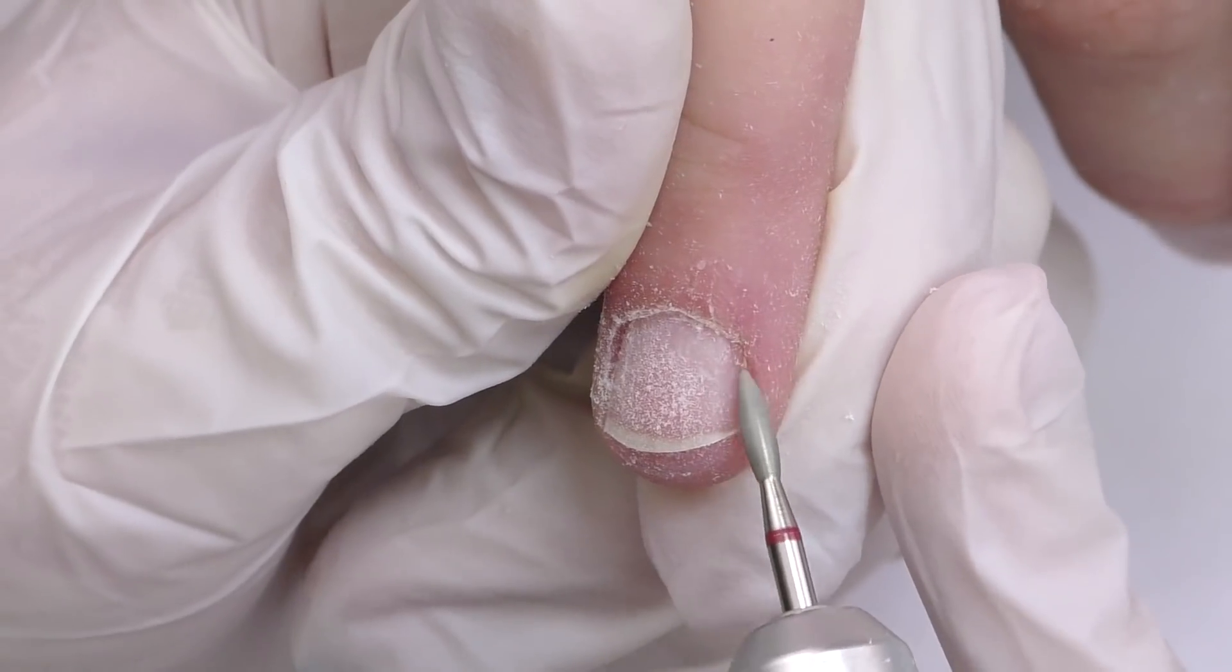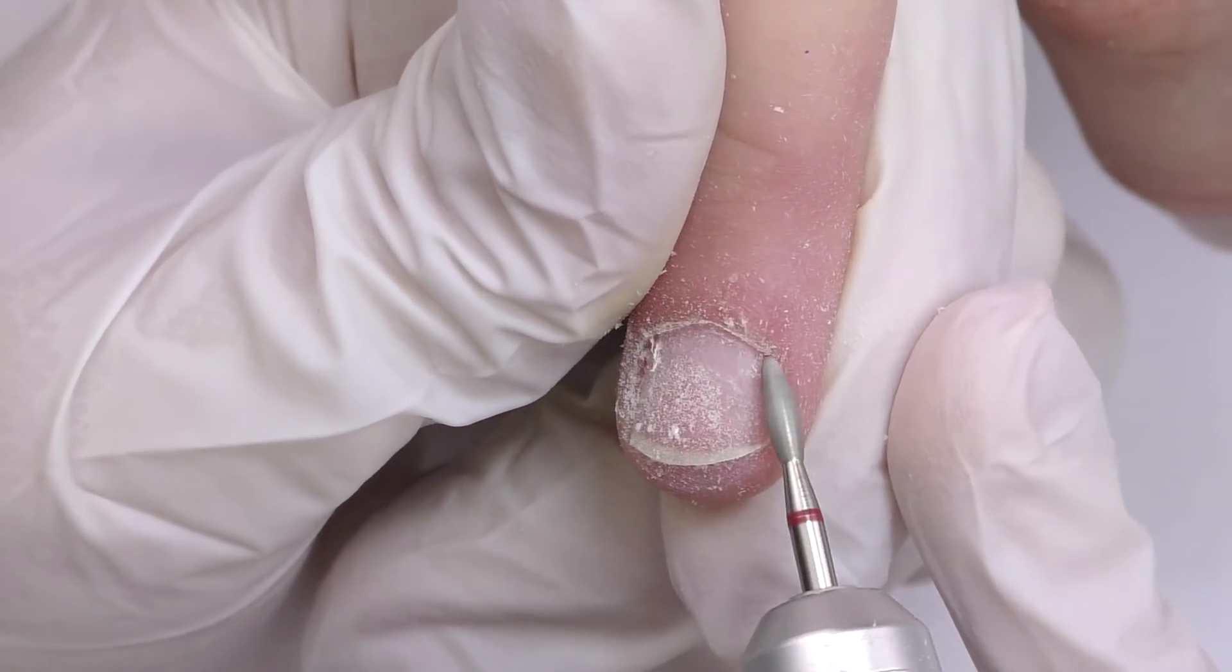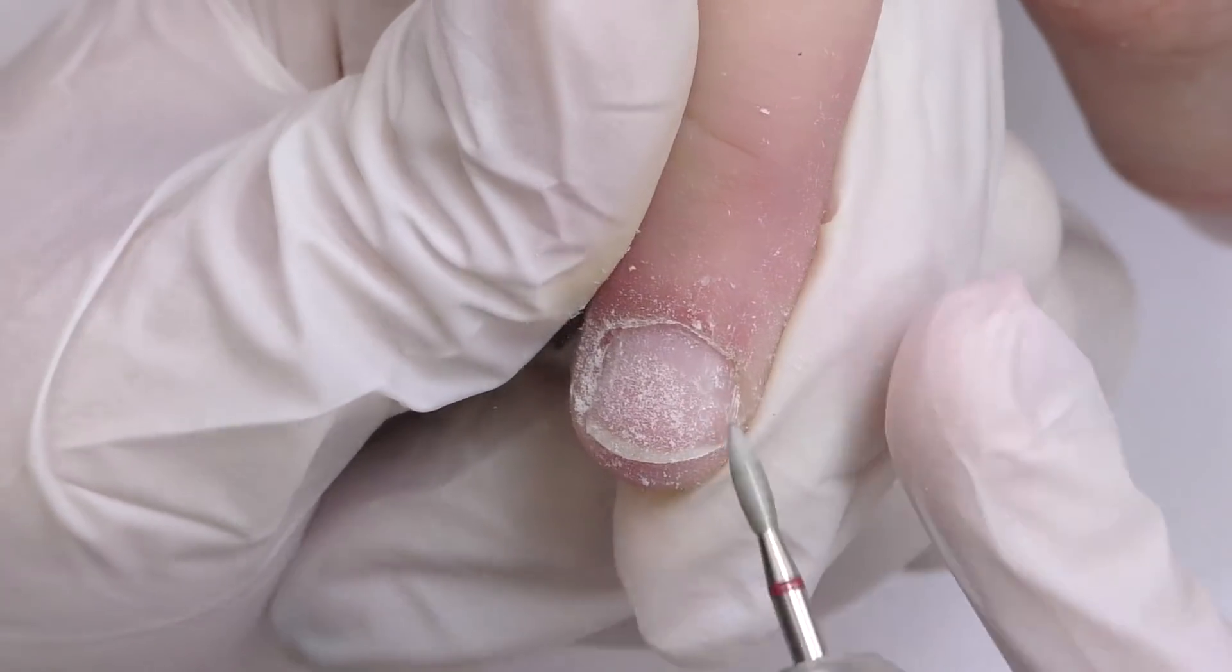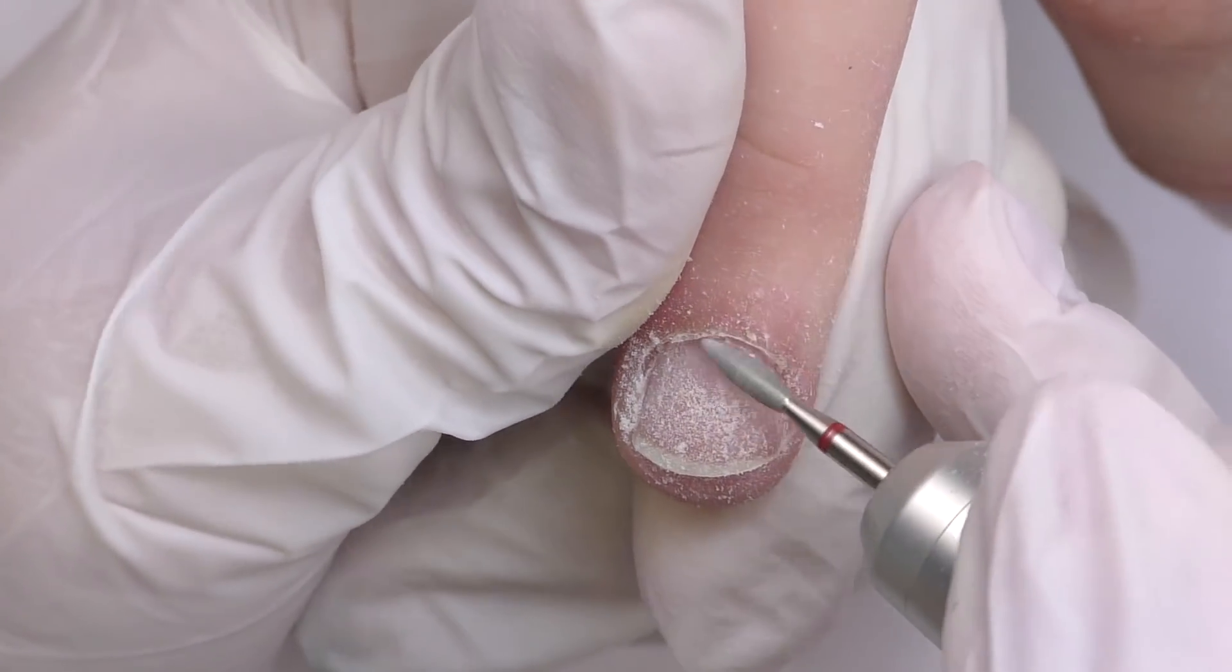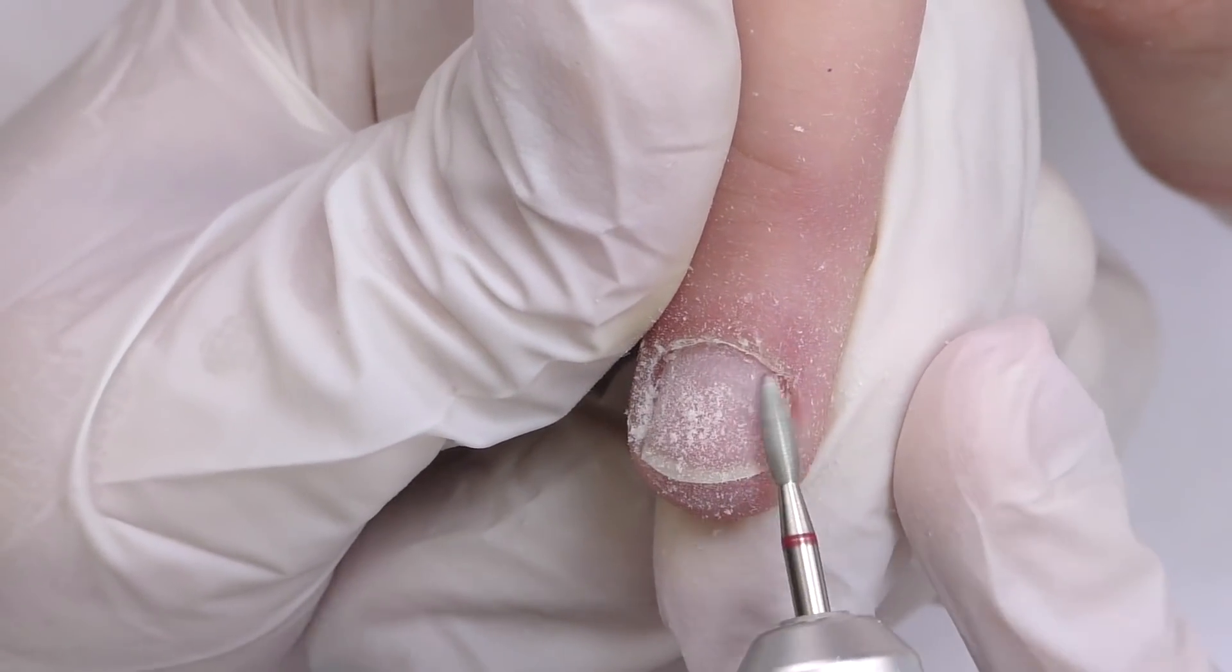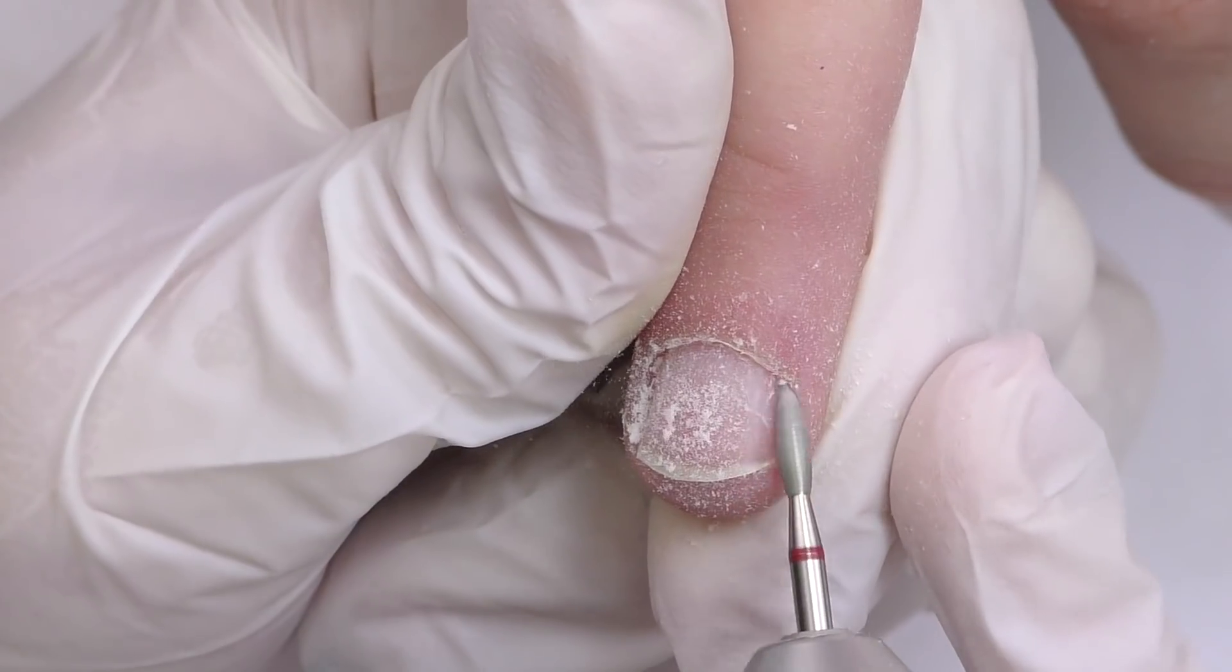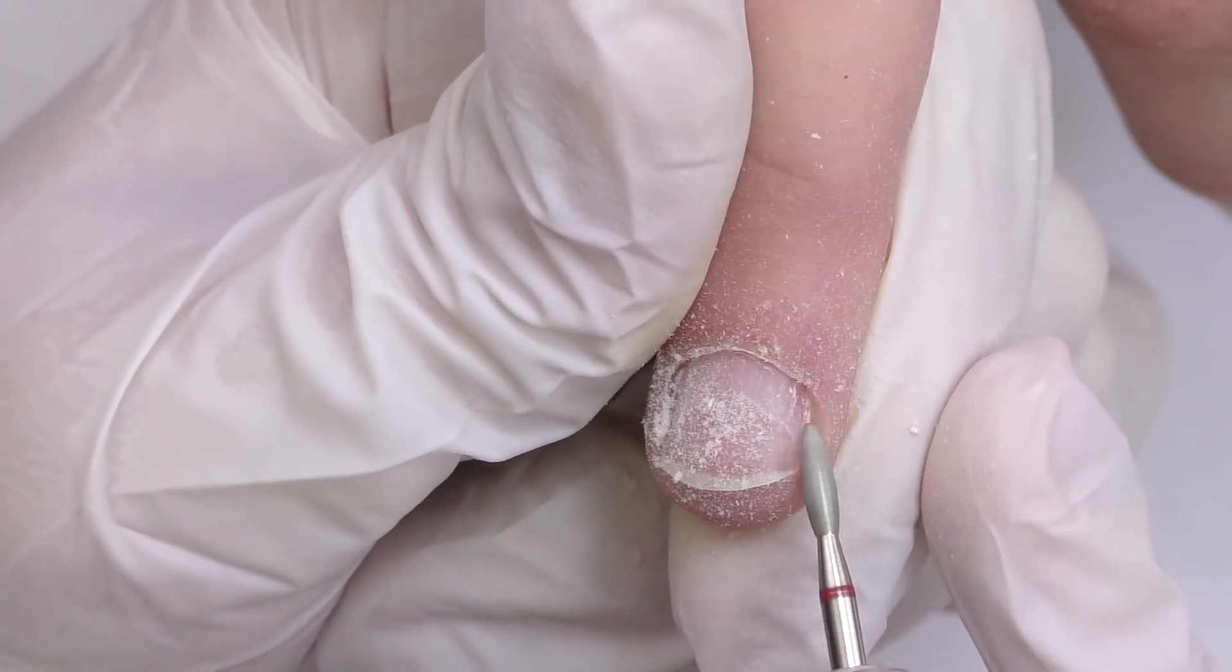Then it is time to take care of the cuticles. I will be using diamond bit with a red band and as you can see, there is something to work on. So I'm using speed of 16,000 rotations per minute and pushing up the cuticles.